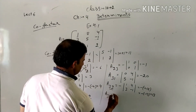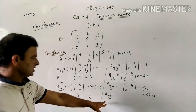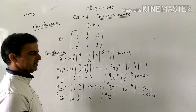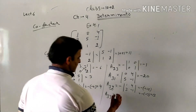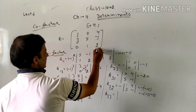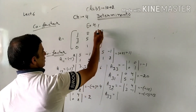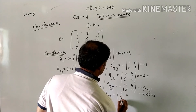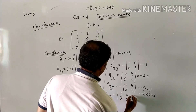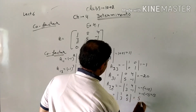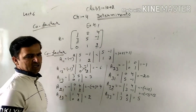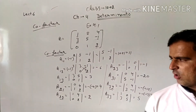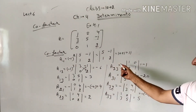A33: sum 3+3=6, even, so no minus. Deleting row 3 and column 3 leaves [1, 0; 3, 5] — wait, leaves [1, 3; 0, 5]. Determinant = 5 - 0 = 5. So A33 = 5. We have now found the co-factors of all elements. This is how co-factors are calculated.